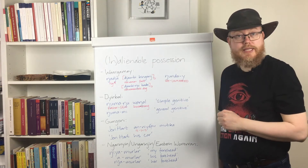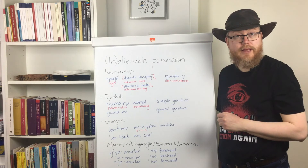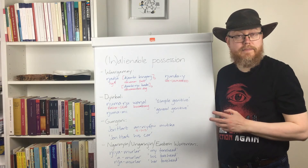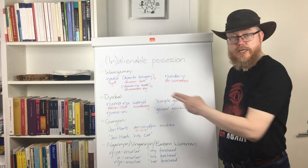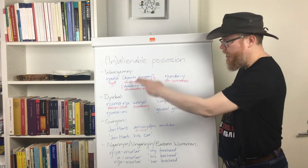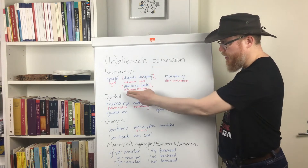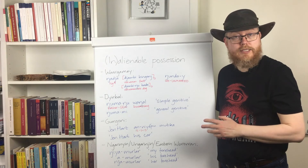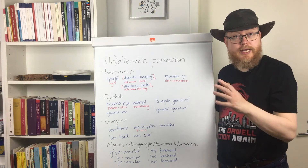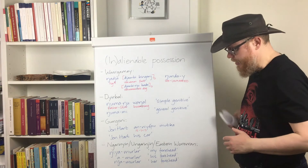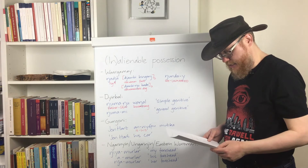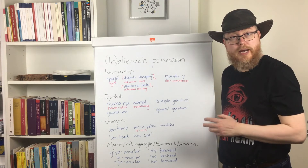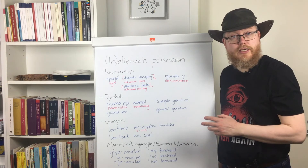Wargamai is now an extinct language. In 1981 there were three speakers left and they have since died. The language that was traditionally Wargamai's neighboring language and which is also closely related, Dyirbal, is still alive. But the number of speakers has been falling decade by decade since the 1970s, and in the 2016 census there were eight speakers left of Dyirbal. So it might go extinct soon too, which is very unfortunate.